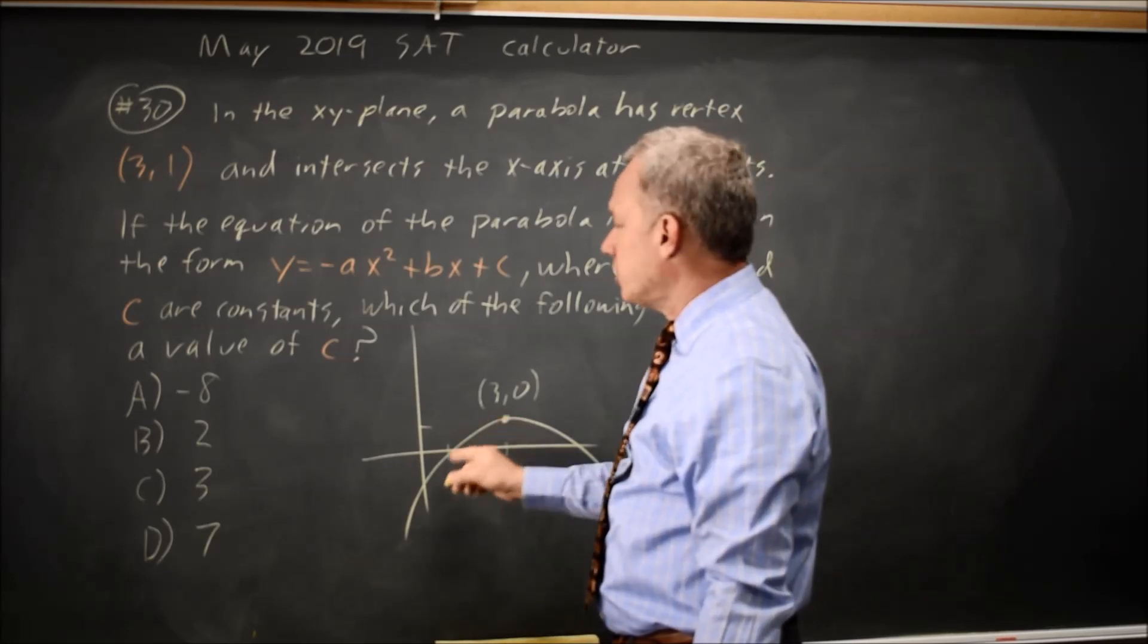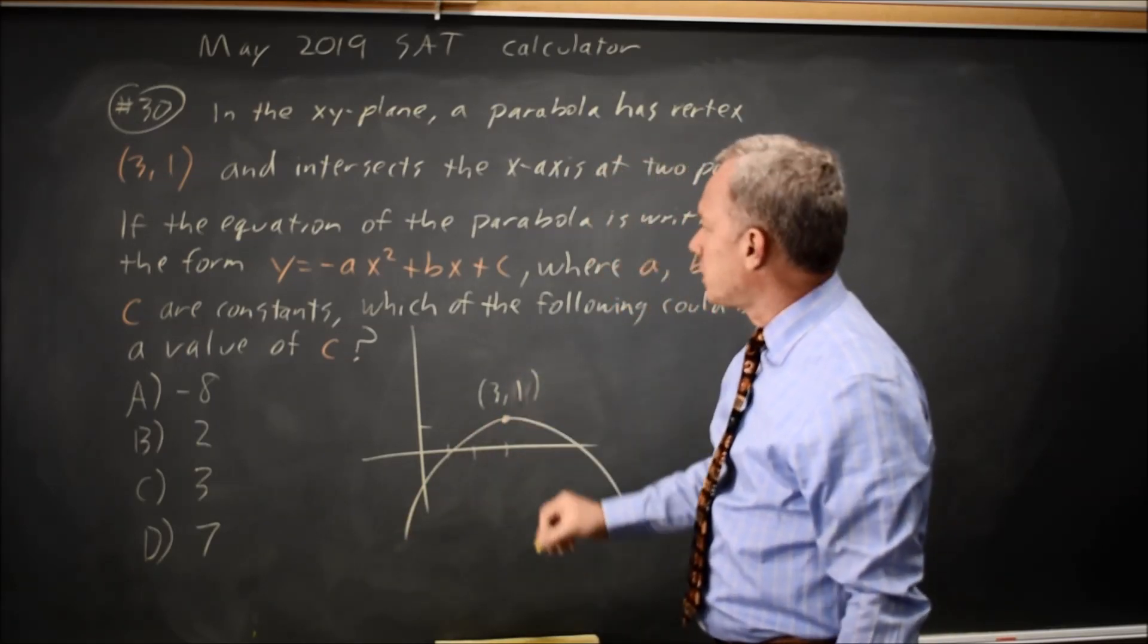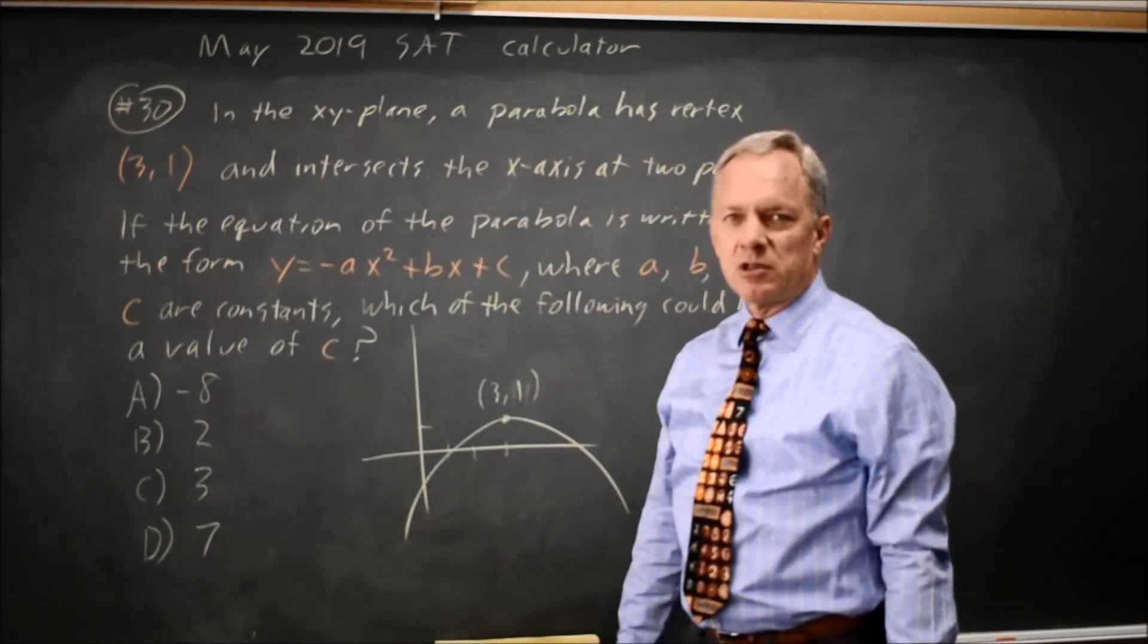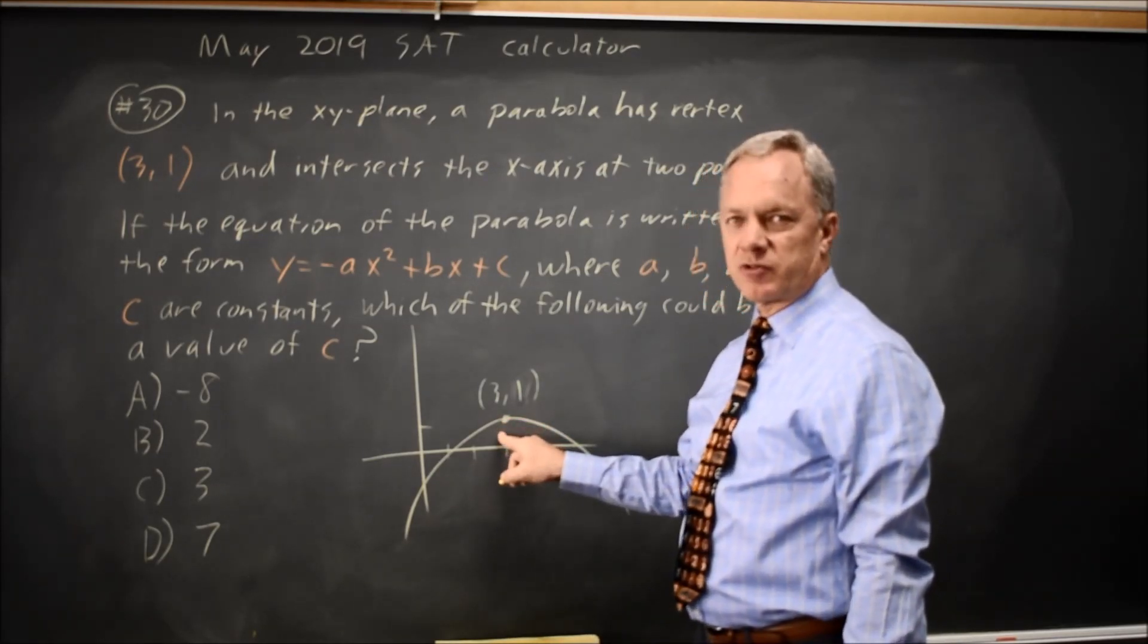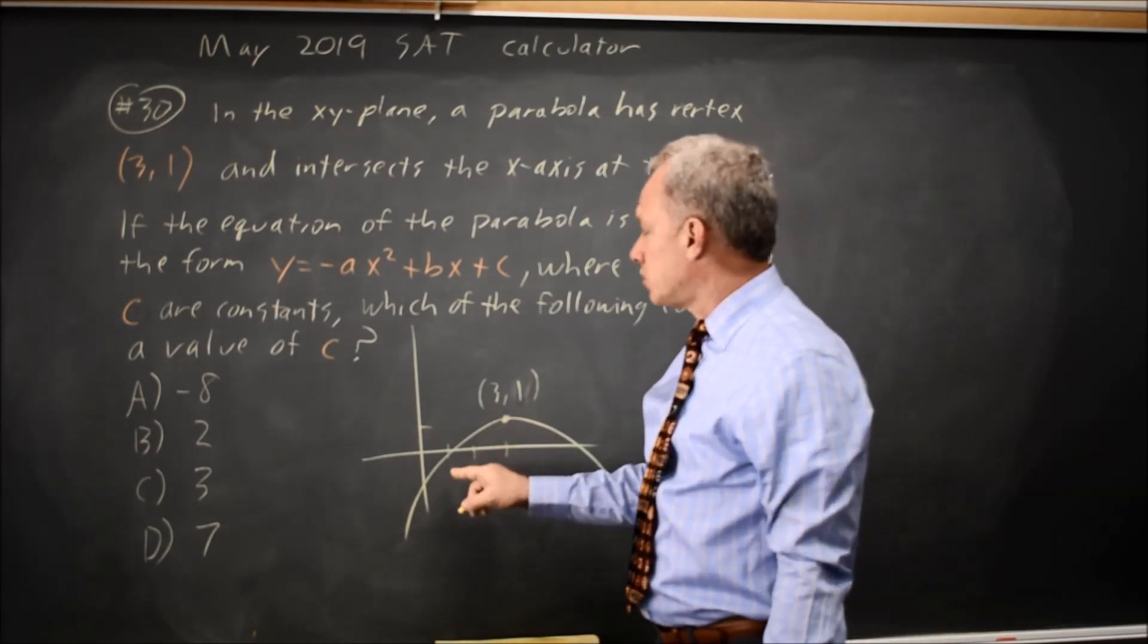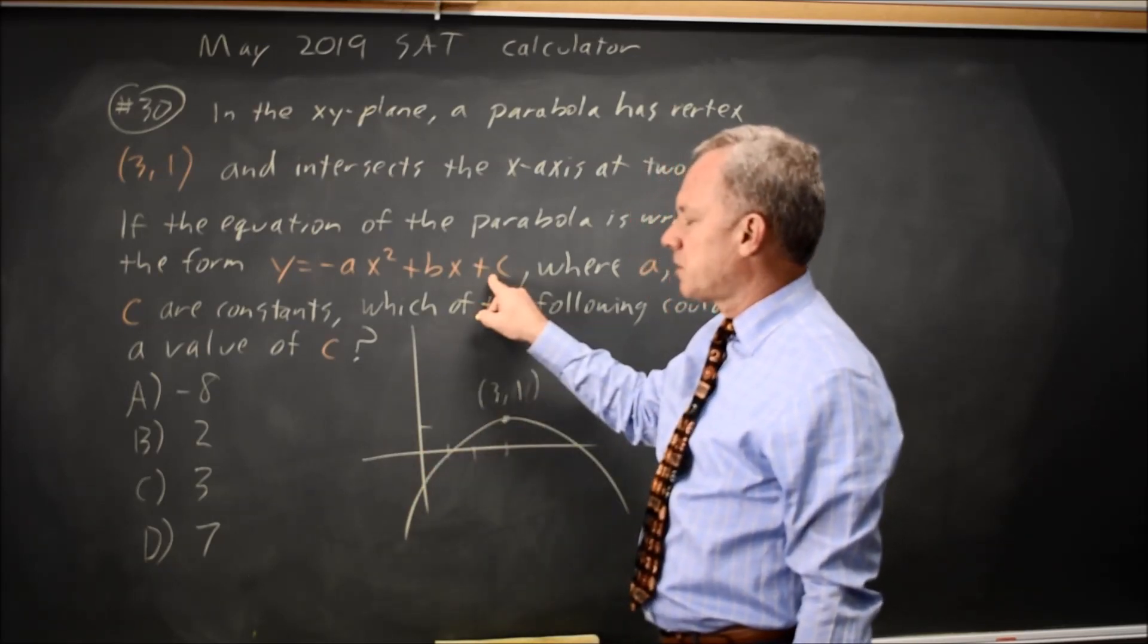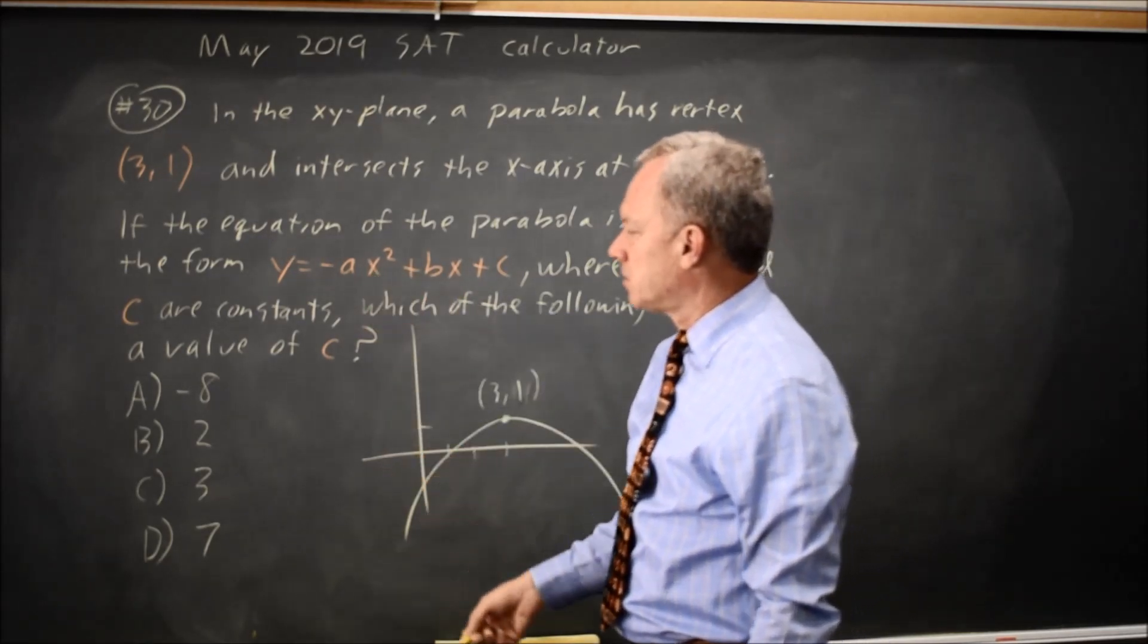Since the parabola opens down, the y-intercept cannot—I should say 3, 1, because the vertex is at 3, 1. Since the parabola opens down, the y-intercept cannot be above the vertex. The vertex is the maximum, so the y-intercept has to be a number less than 1. c has to be less than 1 because c is the y-intercept, the y value when x is 0.